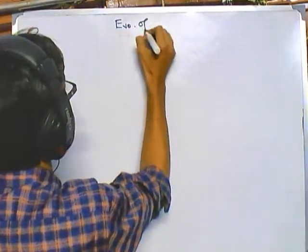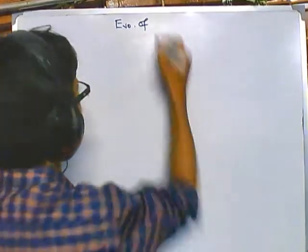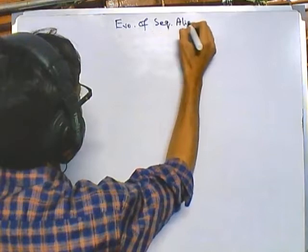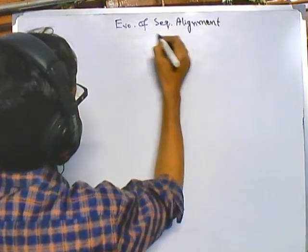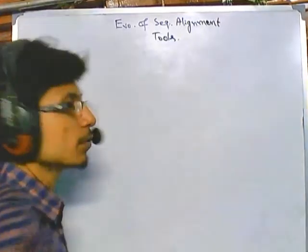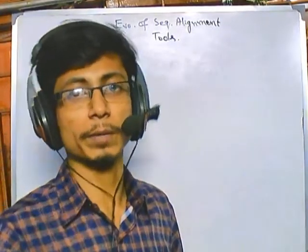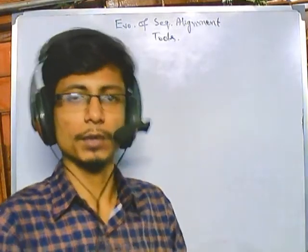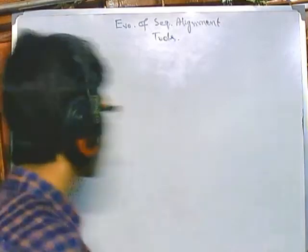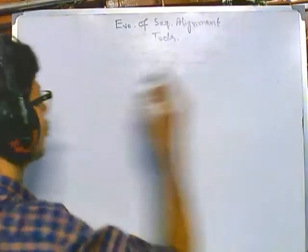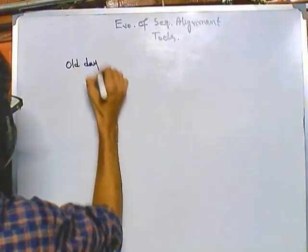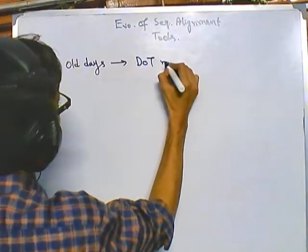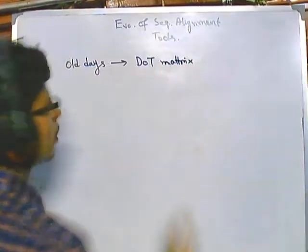Welcome back friends. In this video we will be doing a quick overview about the evolution of different bioinformatics tools or sequence alignment tools. For each sequence alignment tool there is a programming algorithm being used, because algorithms define how the task is handled. At the very beginning, in the old days, we had dot matrix analysis, also known as dot plot.